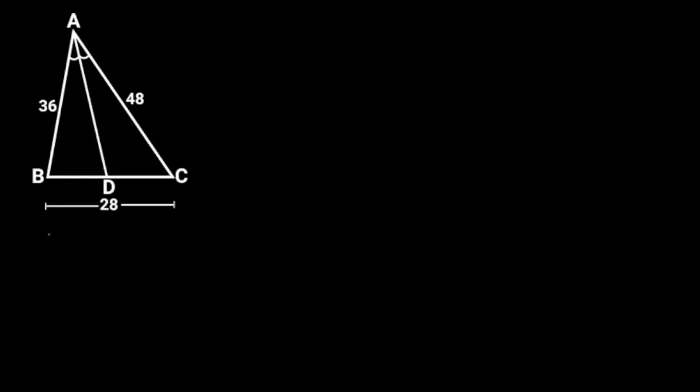This figure is a triangle with sides 36, 48, and 28 units. If line AD is the angle bisector of angle BAC, find the value of BD and DC.